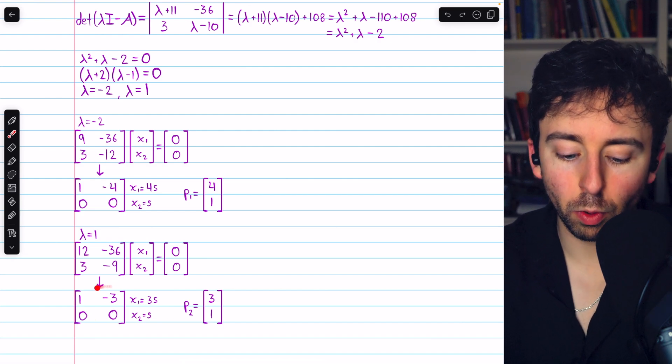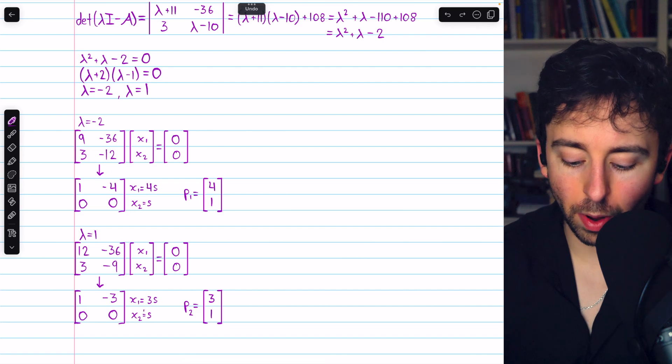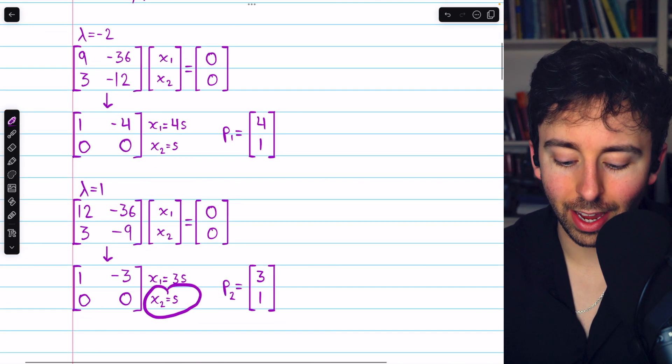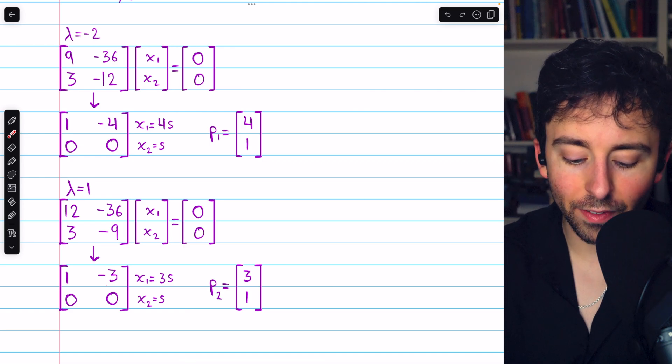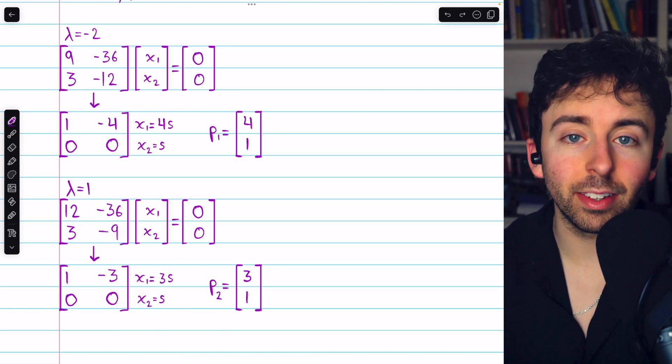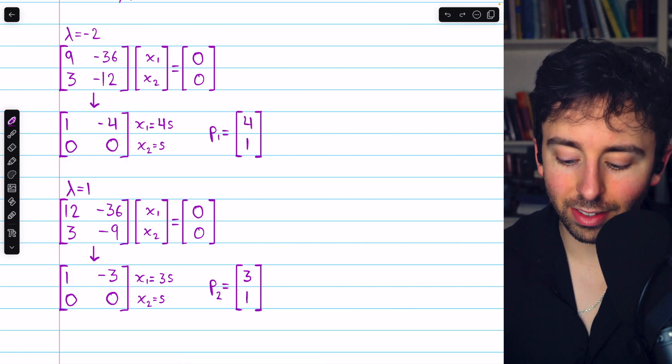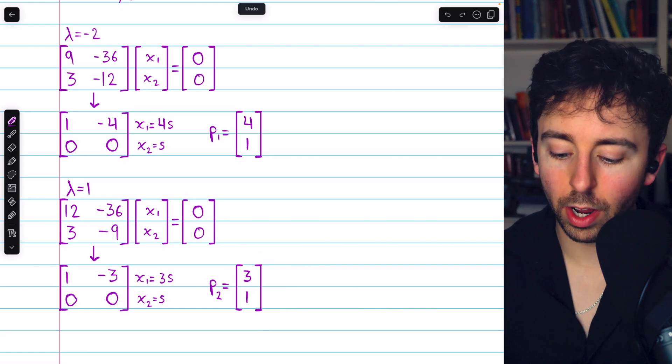That gets us to this reduced row echelon form. There's no leading entry in column 2, so x₂ is a free variable. Let's say x₂ = s. And from row 1, we have that x₁ = 3s. So, the basis for the eigenspace just consists of this eigenvector, the coefficients of s, [3, 1].